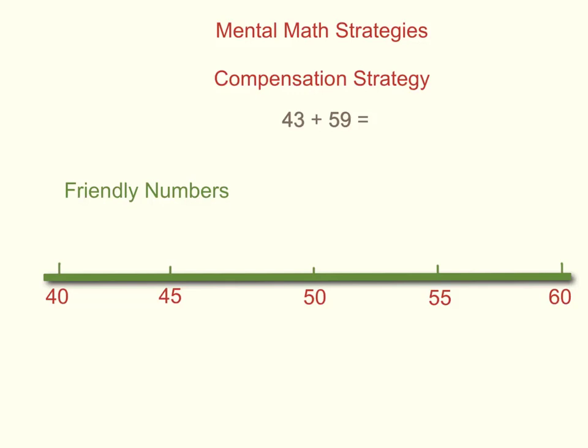Before we begin looking at how to solve questions using the compensation strategy, we have to understand what a friendly number is. If we look at the number line below, our number line consists of all friendly numbers. Friendly numbers are numbers that end in fives and zeros because these numbers are easily added in our head without the need to write questions down on a piece of paper.